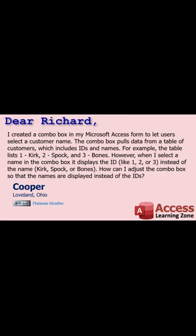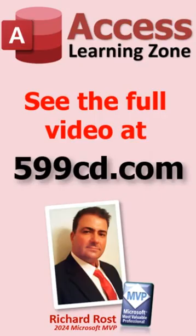Cooper says: I create a combo box in my Microsoft Access form to let users select the customer name. The combo box pulls data from a table of customers which includes IDs and names. For example, the table lists — and I changed the names, don't ever send me real names — one: Kirk, two: Spock, three: Bones. However, when I select the name in the combo box, it displays the ID like one, two, or three instead of the name Kirk.